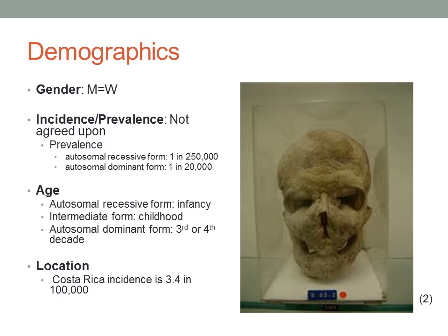Osteopetrosis has not been found to have a gender predilection, and its incidence and prevalence are not well agreed upon in literature. Some sources say 1 in 100,000 to 500,000, while others give prevalence based on the form considered. The autosomal recessive and dominant forms are present in 1 in 250,000 and 1 in 20,000, respectively. Age of presentation depends on the form, with the autosomal recessive form presenting during infancy, the intermediate form during childhood most often in the first decade, and the autosomal dominant form between ages 20 and 30.